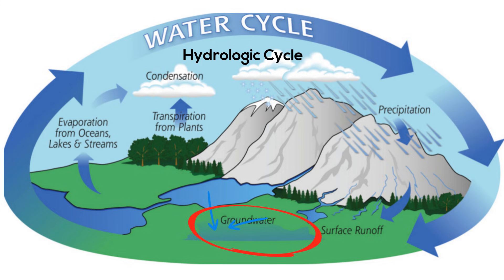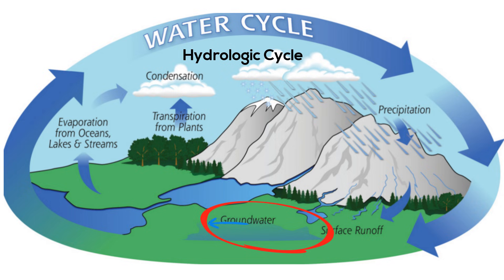The groundwater may take several different paths. The groundwater may seep its way into the oceans, rivers, or streams. Or it may go into an aquifer, which is a body of saturated rock through which water can easily move.